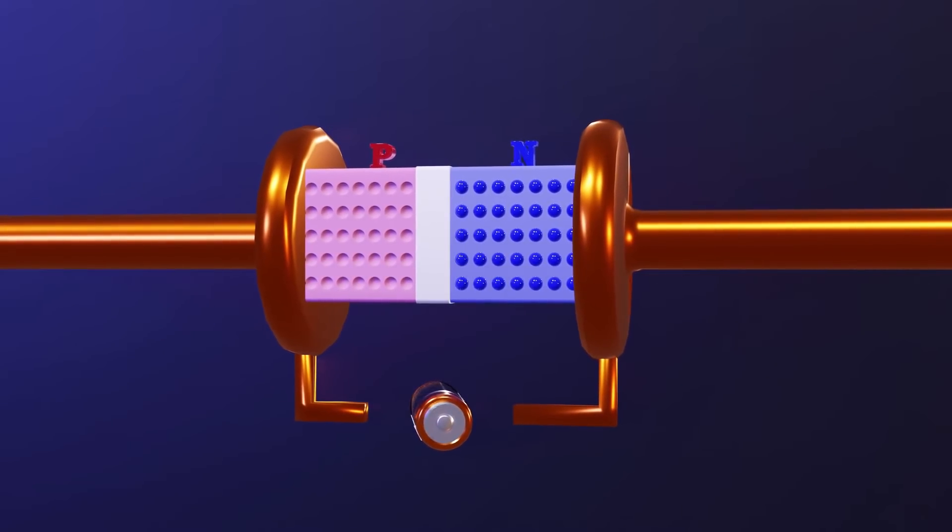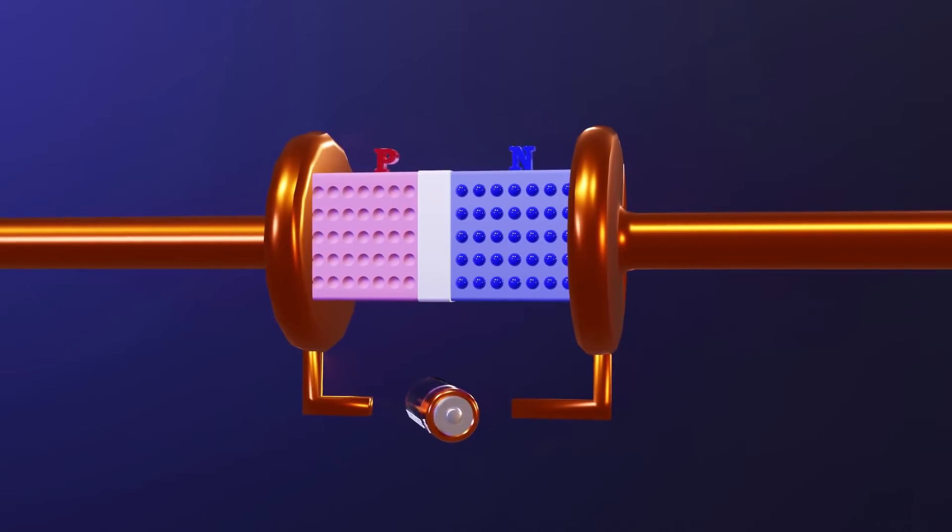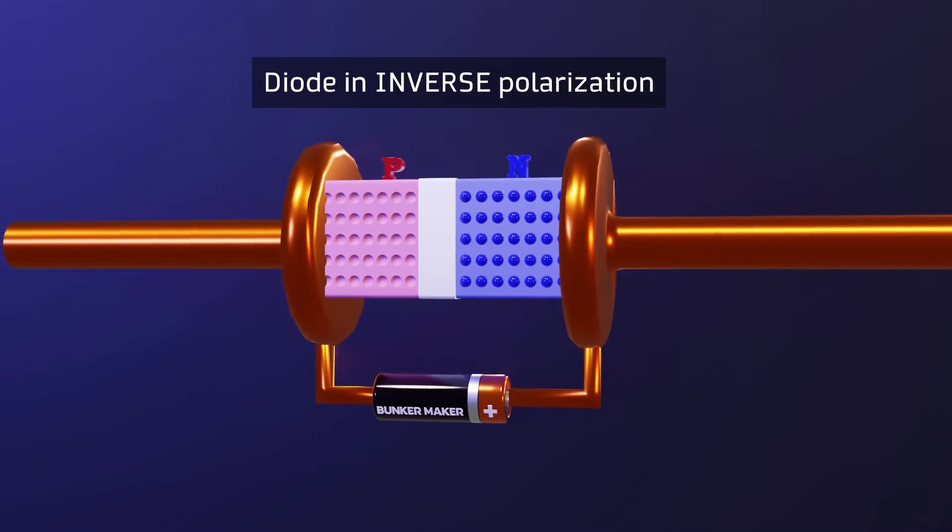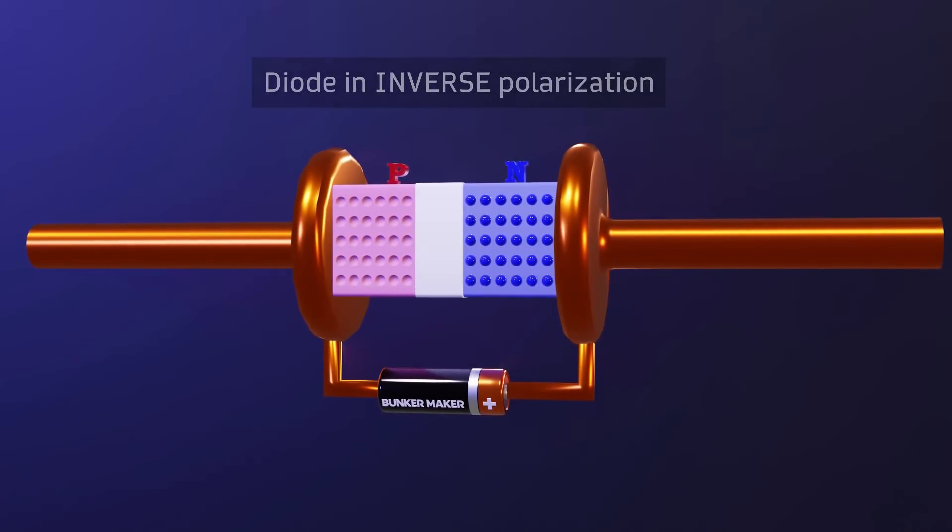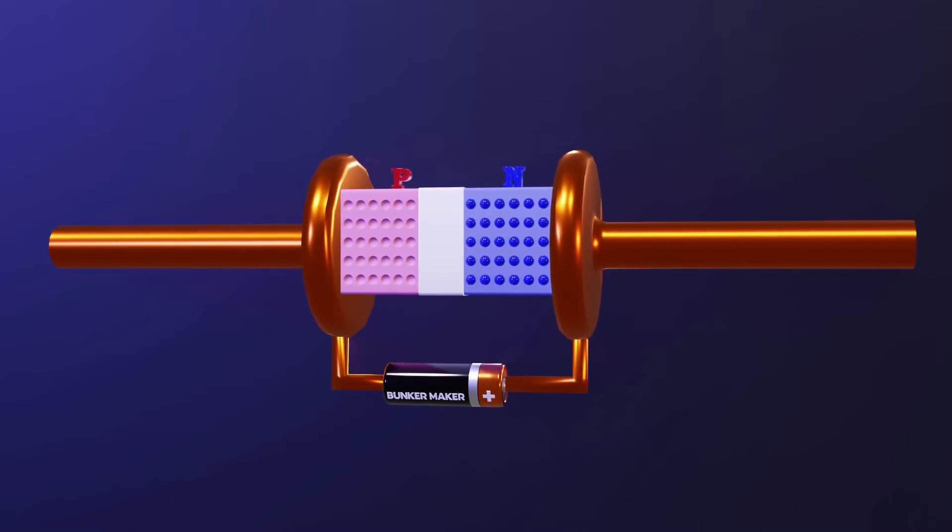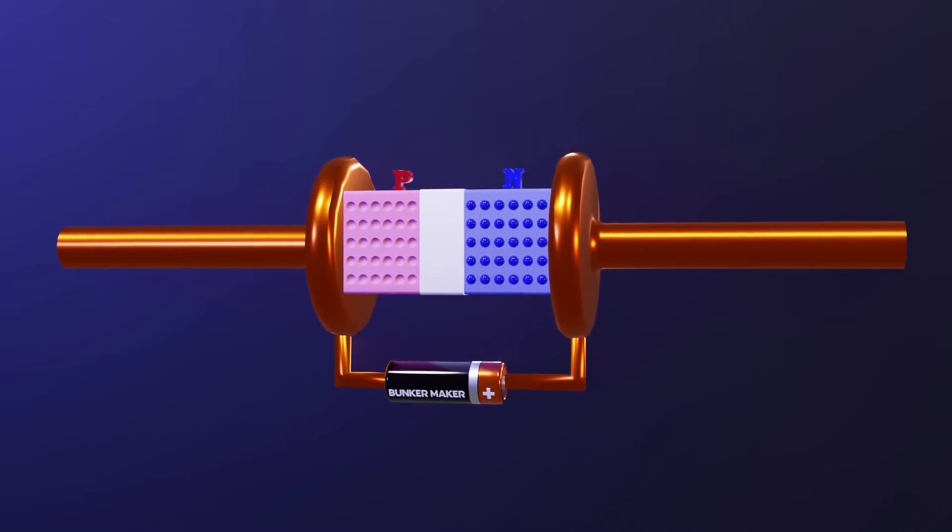That is not all. As that depletion zone can be overcome by having a direct polarization P-N junction, it can also increase its size in reverse polarization. For a diode it just means that electrons cannot flow, but as we will see later, this same principle can be useful as a control method in a transistor.